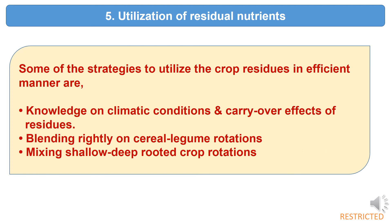The fifth measure for improving fertilizer use efficiency is utilization of residual nutrients. Strategies to utilize crop residues efficiently include knowledge on climatic conditions and carry-over effects of residues, blending rightly in cereal-legume rotations, and mixing shallow and deep-rooted crop rotations.